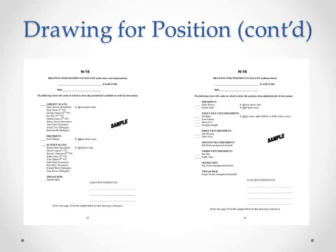The reason for this is that there should really be only two advantages to running on a slate: the first is that during the nomination period, if you have petitioning, the entire slate needs to collect only one set of signatures; and the other is only that you get a slate box on the ballot so that all candidates on the slate can receive a vote by one motion from the members. There should not also be an additional advantage for position on the ballot for slates over individual candidates.